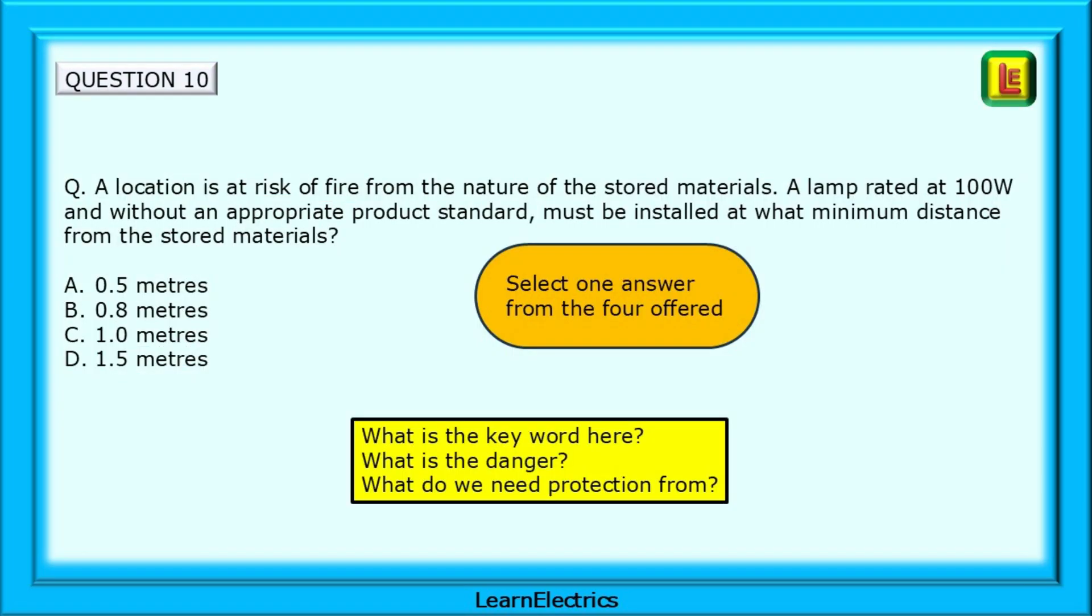Question 10 tells us that a location is at a risk of fire from the nature of the stored materials, a lamp rated at 100 watts and without an appropriate product standard must be installed at what minimum distance from the stored materials. Think, what is the key word here? What is the danger from that key word? What do we need protection from? Look on page 3 for a clue, then find the correct part of the book.